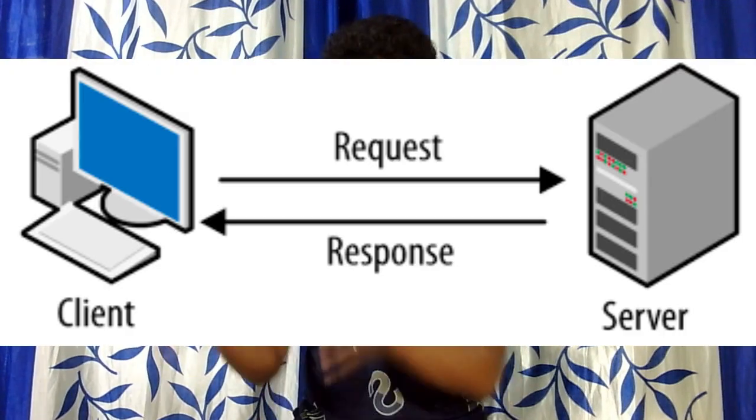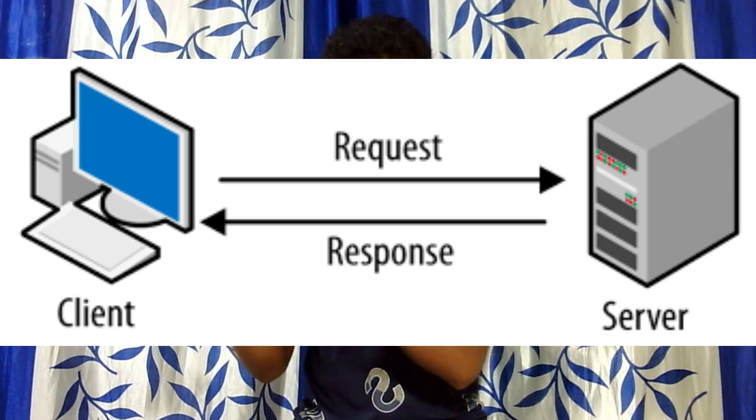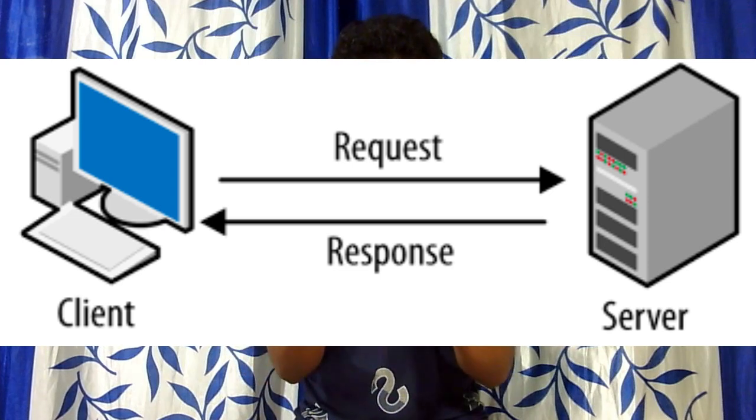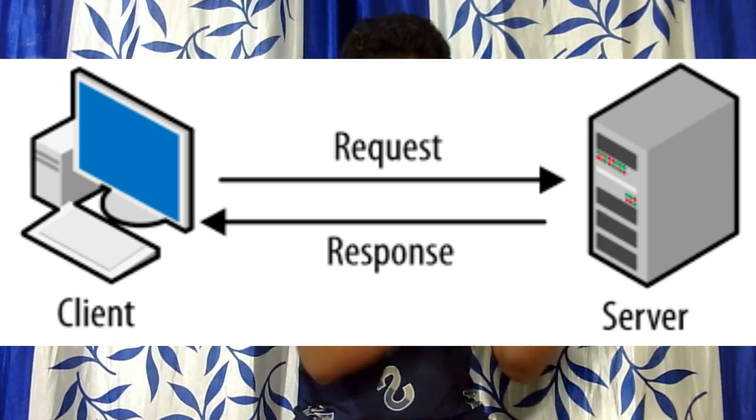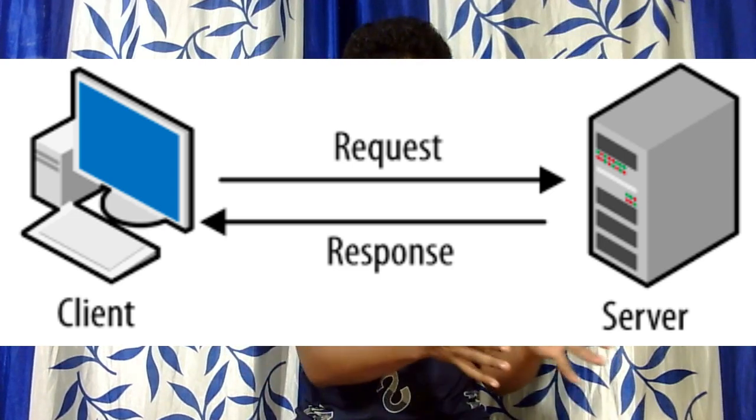Once you start developing, you can understand the architecture — server, software, and user. Understanding this basic architecture is important. It starts simple, but it can be complex architecture, and the architecture can implement every feature.